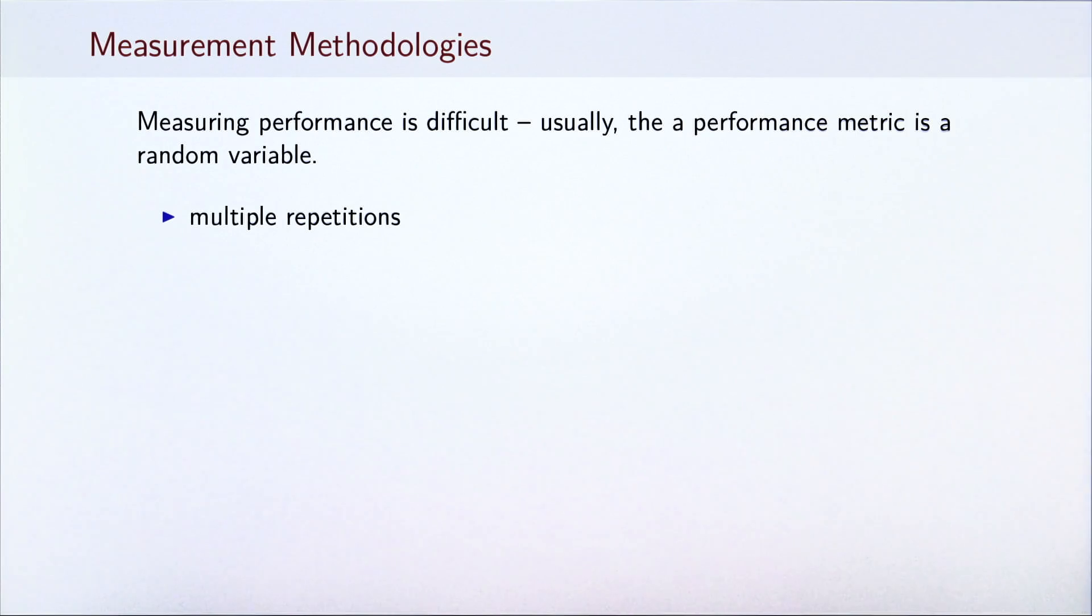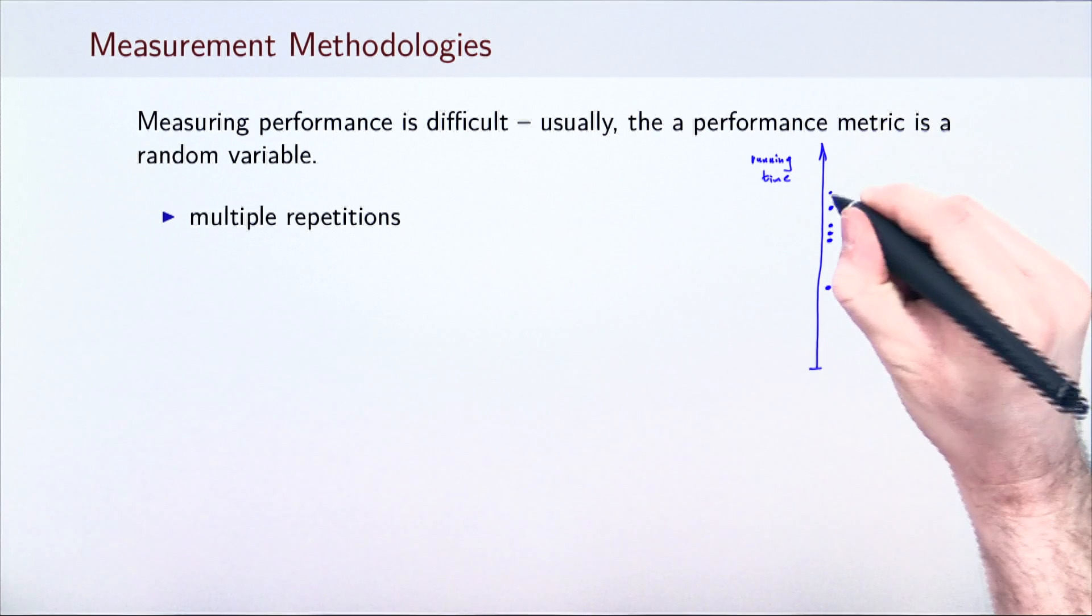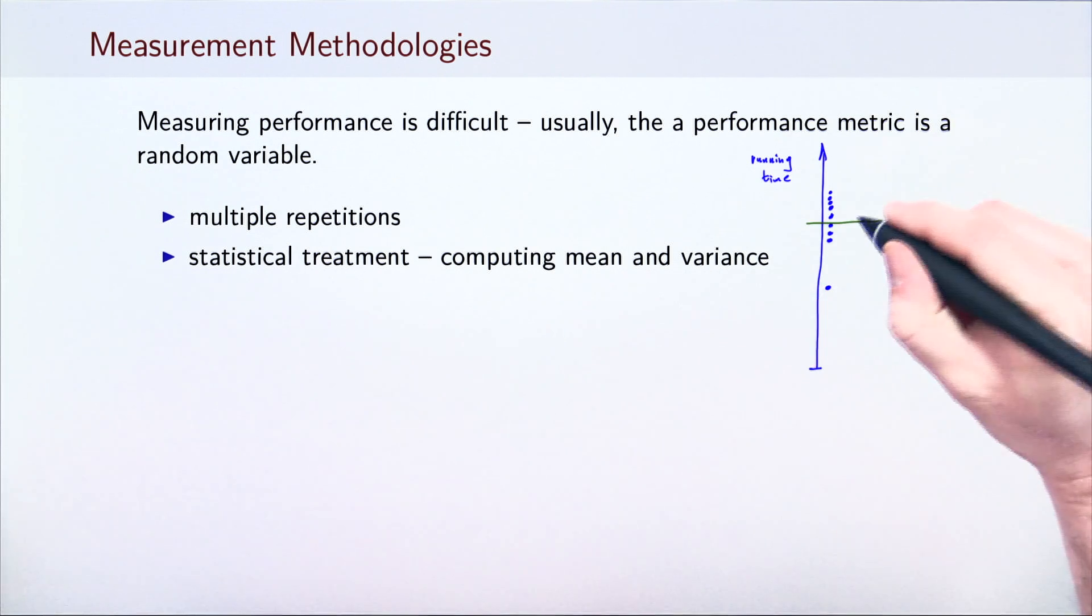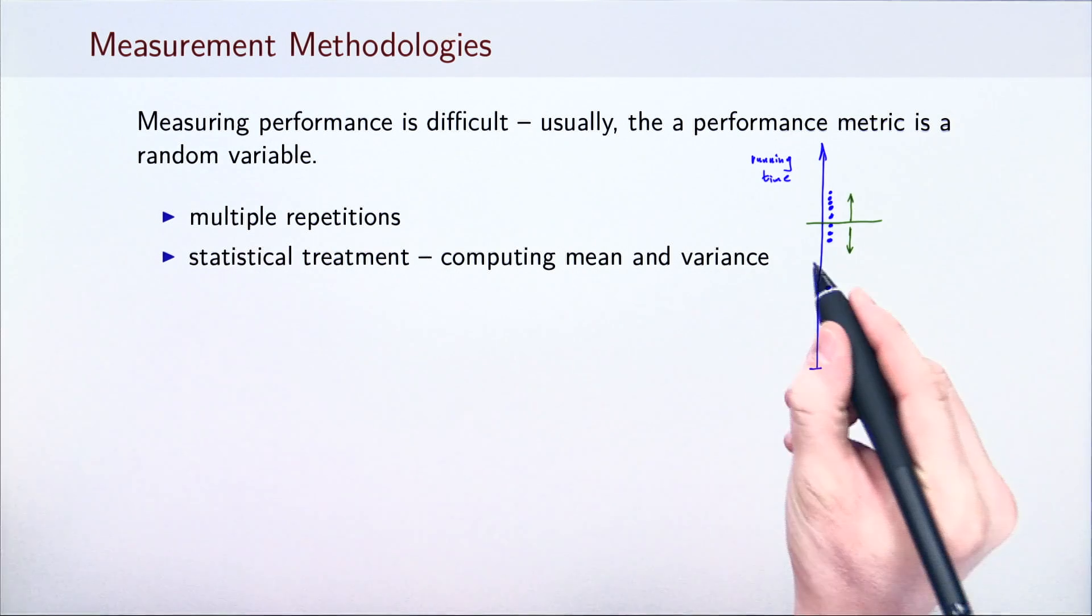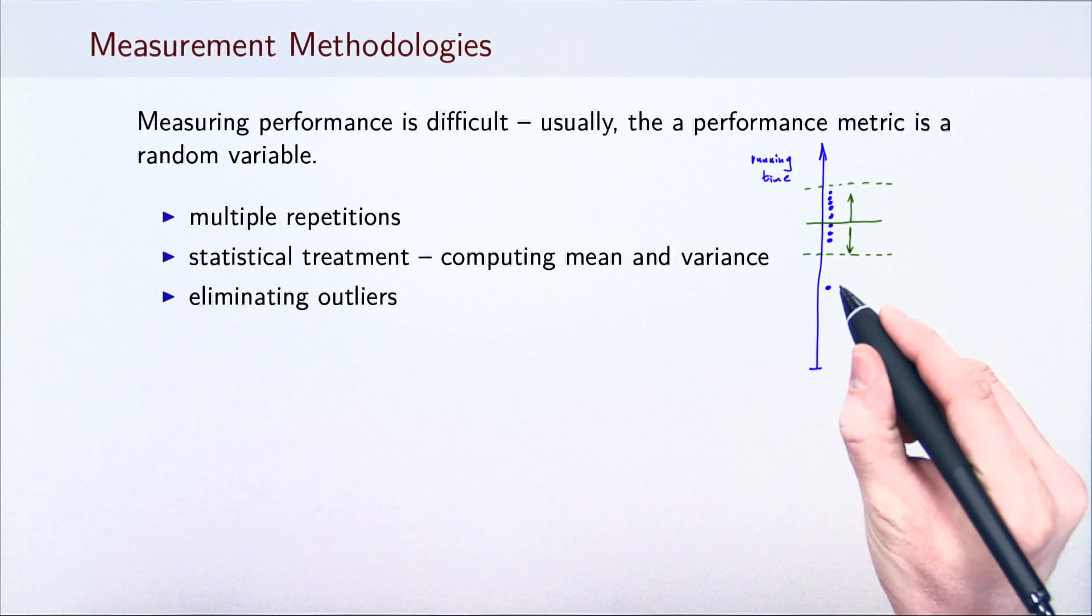The first obvious approach is to repeat the measurement multiple times, to get a sense of how the program behaves. However, this is not enough. Once we obtain a sequence of measurements, we need to do some statistical analysis. In the simplest form, this involves computing a mean value, variance, and confidence intervals. We can also use statistics to eliminate outliers, a handful of measurements that deviate from the majority by some large and unusual amount.